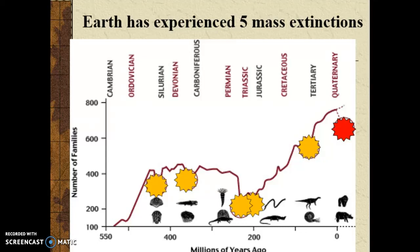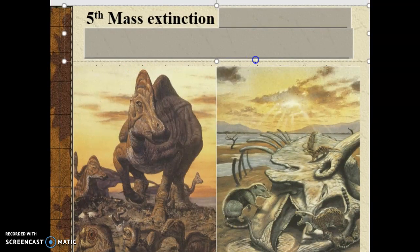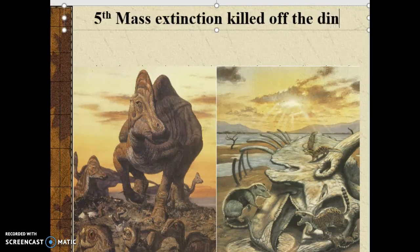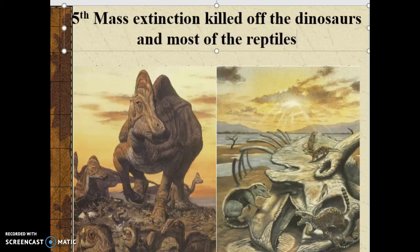All five previous mass extinctions were natural events. The last naturally occurring one, number five, is known as the Cretaceous Calamity. This happened about 65 million years ago when a massive meteor impacted the Earth in what's called the Yucatan Peninsula in Mexico. It came in from the south, slammed into the land, created a massive crater, and threw debris into the atmosphere that changed the global climate. That mass extinction is the one that killed off the dinosaurs — and most of the reptiles.